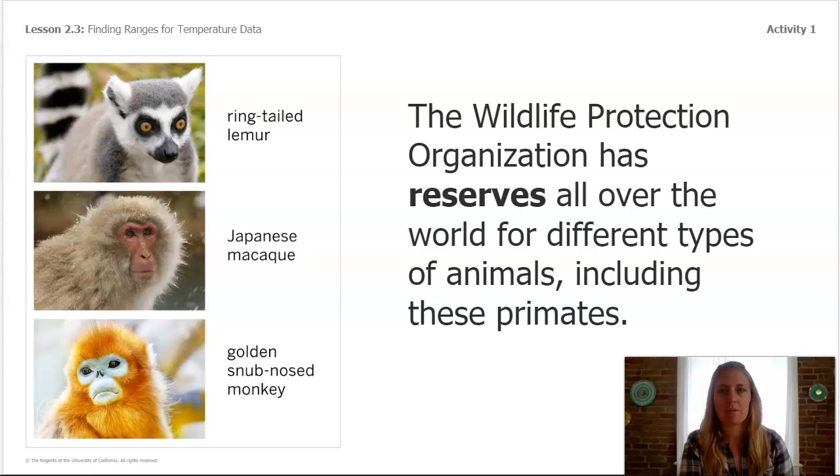Primates include apes, lemurs, macaques, and monkeys. Orangutans, chimpanzees, and gorillas are part of the ape group because they don't have tails, but other primates do have tails.